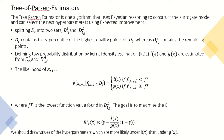One of them is D_l, which includes gamma percentile of highest quality points from D_t, and D_g, which includes all other points. And we should calculate probability distributions over these two subsets.